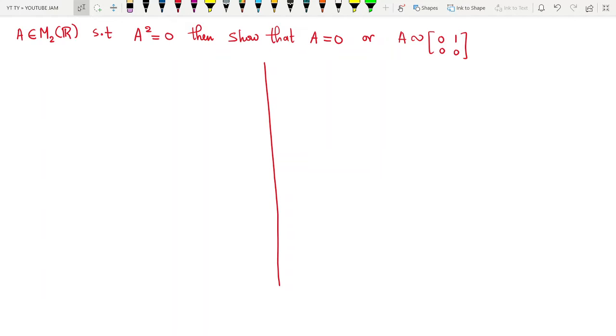Hello dear friends, welcome to this video. In this video we will be discussing the result that if A is a 2×2 real matrix such that A² = 0, then either matrix A is a zero matrix or it is similar to the triangular matrix [0 1; 0 0].